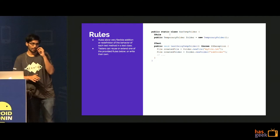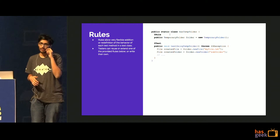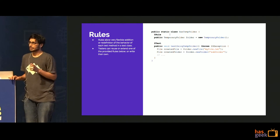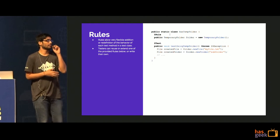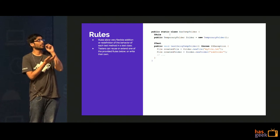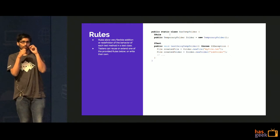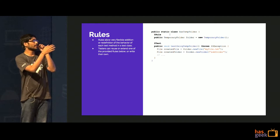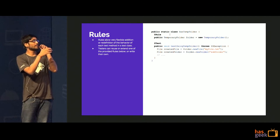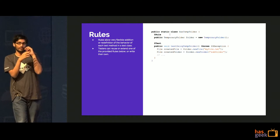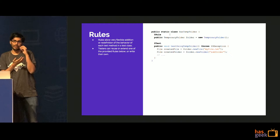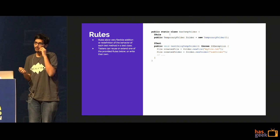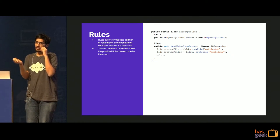The next thing I'm going to talk about is rules — simple JUnit rules. Rules are a really powerful way to manage test setup. One example is TemporaryFolder: when you create different files inside a test, once your test ends, this rule deletes those files. So you are clearing up resources and you don't have to write teardown.